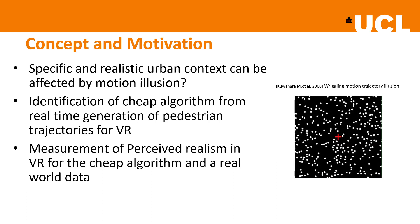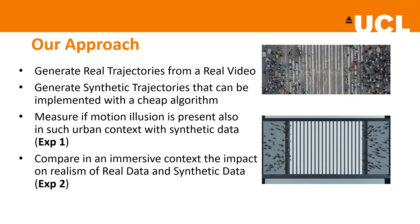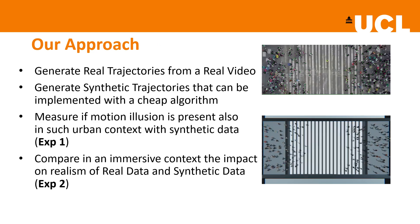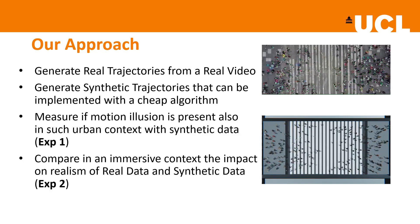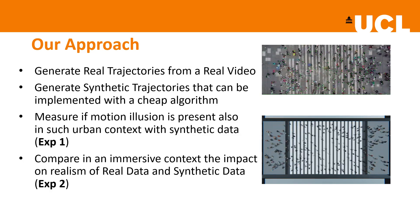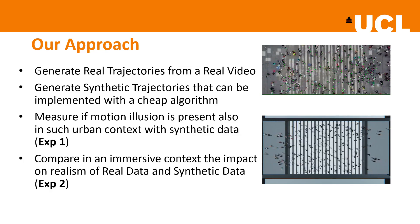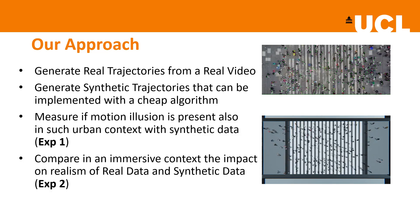Our approach consists of generating real trajectories from real-case video, generating synthetic simulations rendered from different camera angles, adopting the rectilinear algorithm to simulate a pedestrian crossing, generating the trajectories of each simulated agent, measuring how rectilinear trajectories performed in a two-dimensional display, and evaluating the most realistic point of observation in search of the motion illusion.